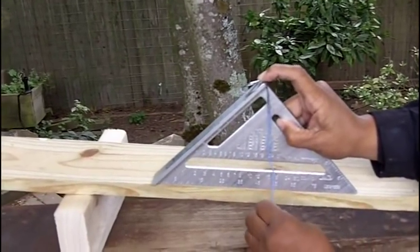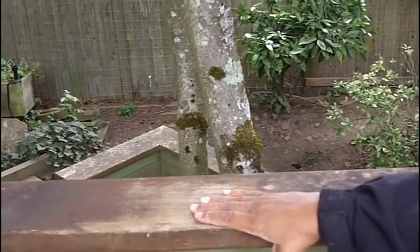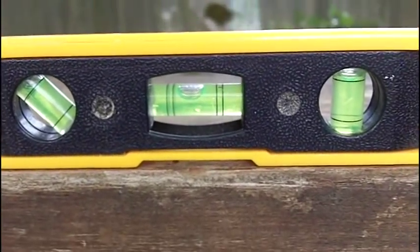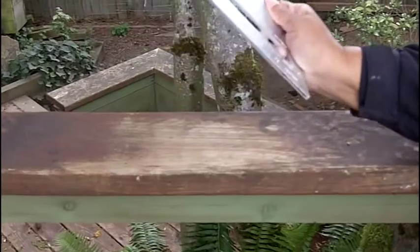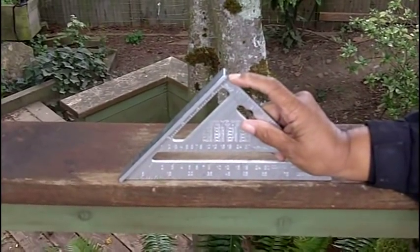So what I'm going to do is I'm going to remove all this, and I'm going to go to a level surface. So we know that this surface here is a level surface. I'm going to take my speed square and set it up, pivot point to the top there.